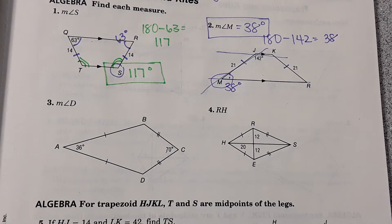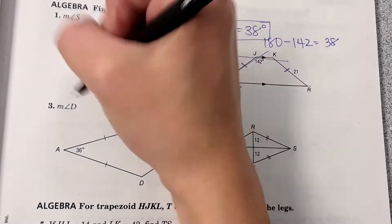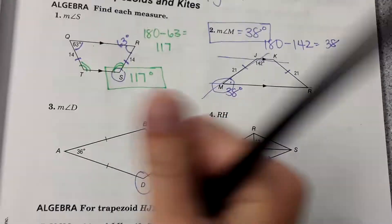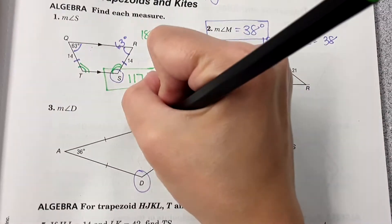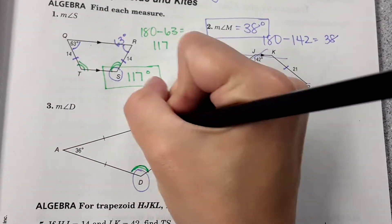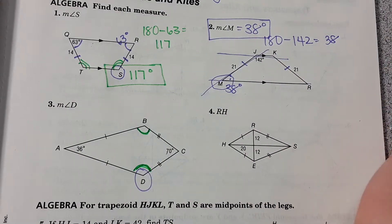Number three, now we have a kite. It's asking for the measure of angle D. Remember with a kite these two angles are the same measure so that's going to help us out here.